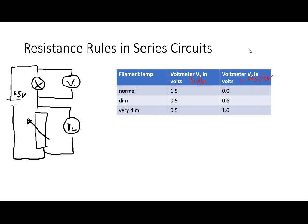If we have our variable resistor completely open — offering no resistance — there is no voltage across that variable resistor at all. All of the potential difference, 1.5 volts from the battery, is across the lamp. However, if we increase the voltage across the variable resistor, it decreases the voltage across the filament lamp and it will dim the lamp. There is some consistency here that we can explore in more detail.